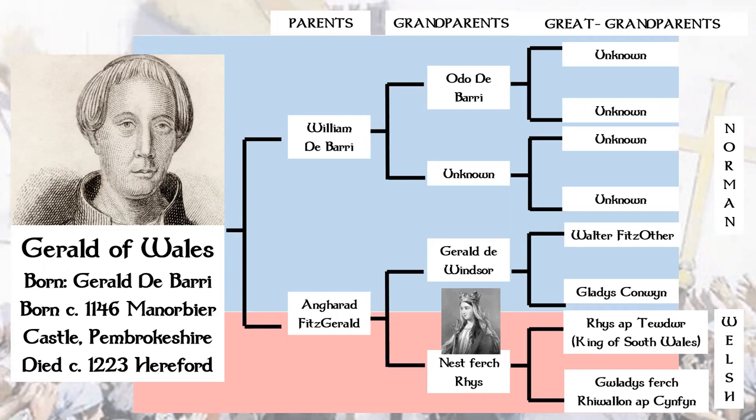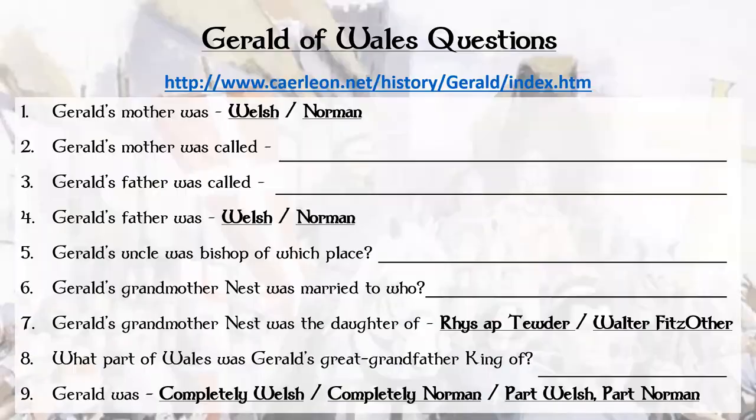Their daughter, Nest Ferch — the one you can see in the picture — is the daughter of the King of South Wales. At this time she was thought of as the last princess of Wales. This is why it's believed that Gerald of Wales at the time was the Prince of Wales, and that he had a legitimate claim to the throne, because he was the grandson of the last known Princess of Wales.